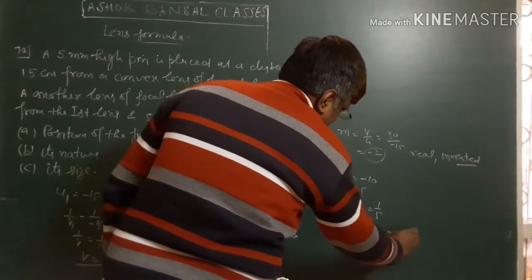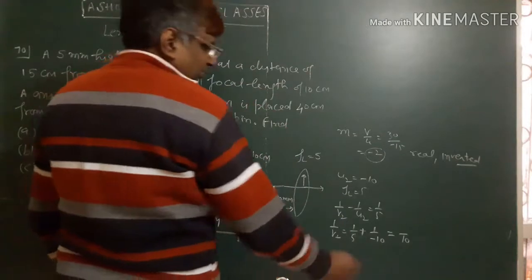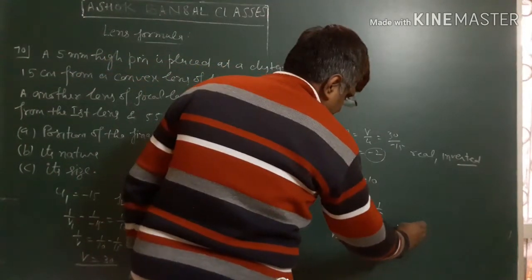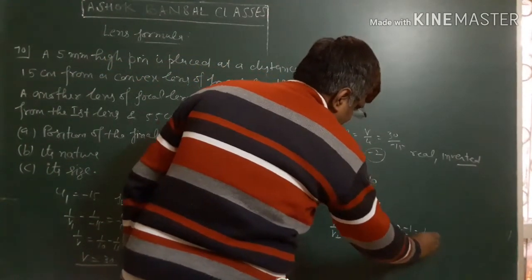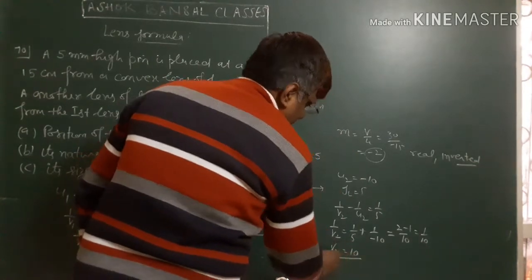Taking LCM of 10, we get 2 minus 1 over 10, so v2 equals 10cm.